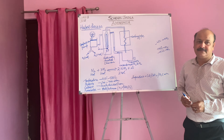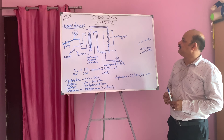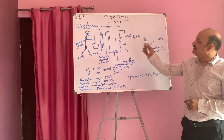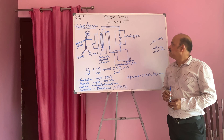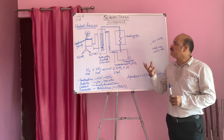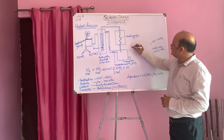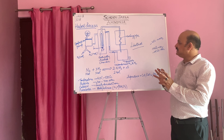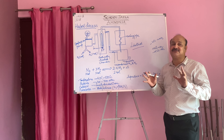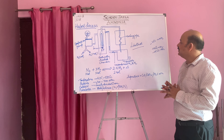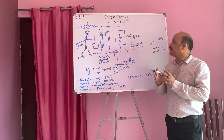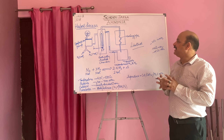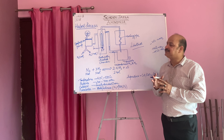Continuing with the same chapter — ammonia — of class 10 ICSE, this is the third part of this chapter. Here you can see the method: Haber's Process. This method is used in industries because production is not going to be a small quantity, it's a large quantity. Whenever you want to prepare ammonia on a large scale, the method used is called Haber's Process.